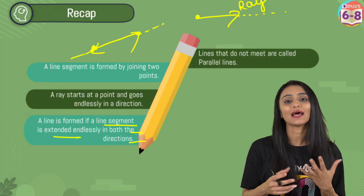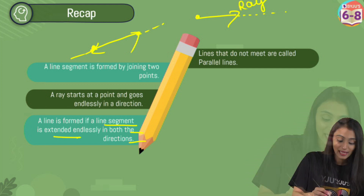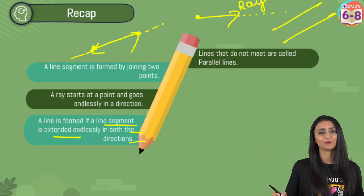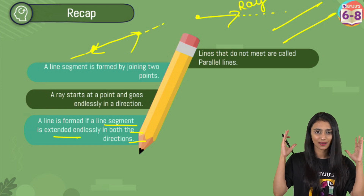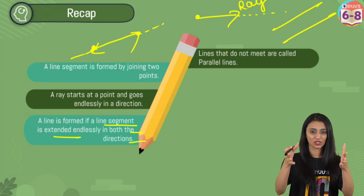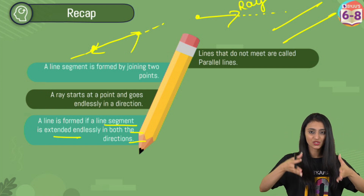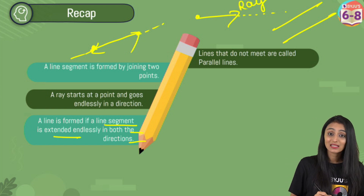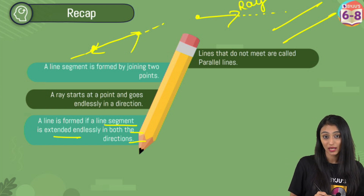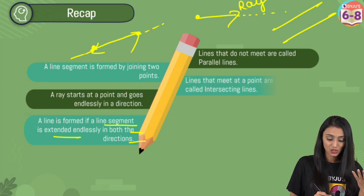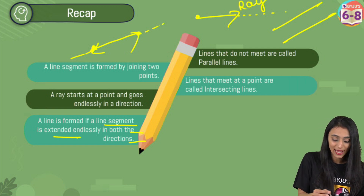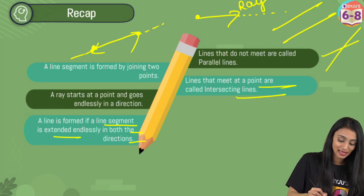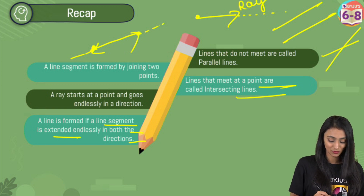What are parallel lines? Parallel lines never meet each other — they cannot meet. A real-life example is railway tracks; they never meet each other. Now, what if lines meet each other at a certain point? We call them intersecting lines — lines that meet at a point, like this over here.